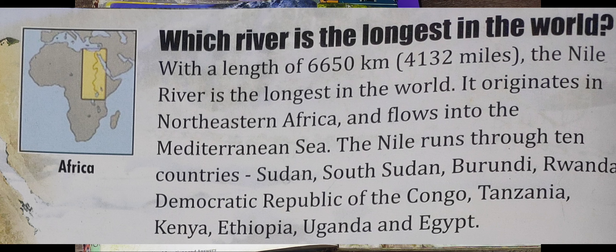The Nile runs through 10 countries: Sudan, South Sudan, Burundi, Rwanda, the Democratic Republic of Congo, Tanzania, Kenya, Ethiopia, Uganda, and Egypt.